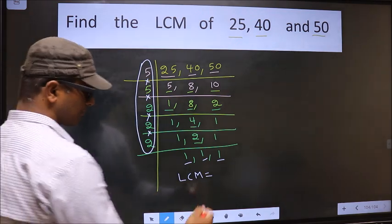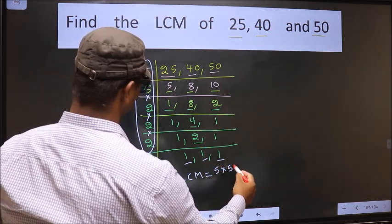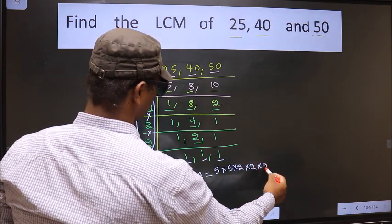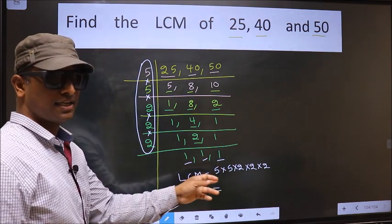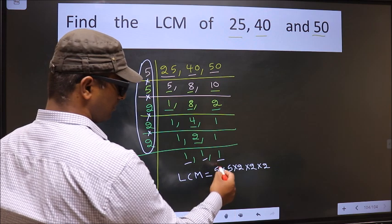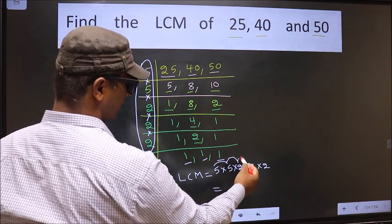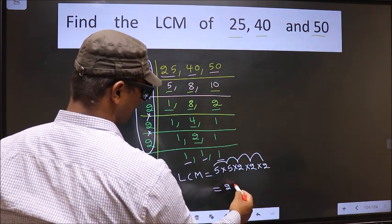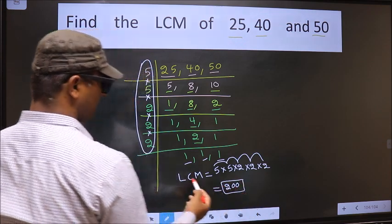That is 5 times 5 times 2 times 2 times 2 times 2. Let us multiply these numbers: 5 times 5 is 25, times 2 is 50, times 2 is 100, times 2 is 200. So 200 is our LCM.